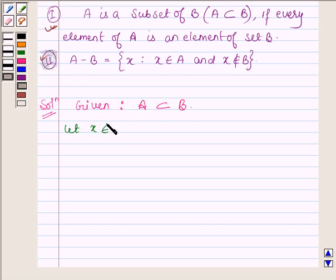Let x be any arbitrary element such that it does not belong to set B. Then this implies x does not belong to set A. This is because A is a subset of B and the elements which are not in set B cannot be in set A also.